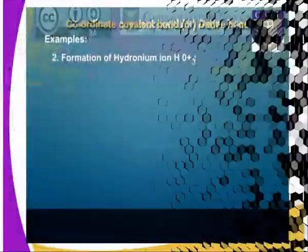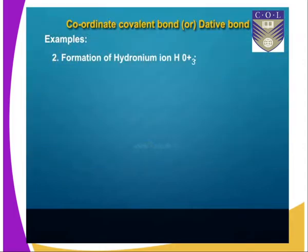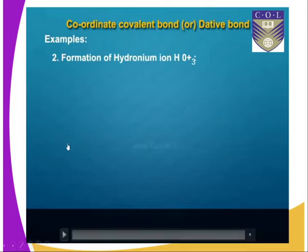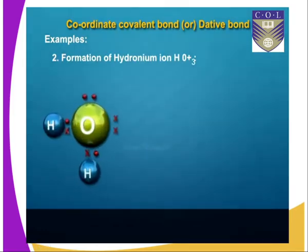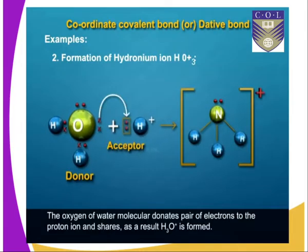Using the following illustration, using hydronium ion, we will be able to understand how a dative bond is formed, and we will be able to see how a single atom donates two electrons to be shared among the two atoms forming this type of bond. Hydronium ion is formed by hydrogen accepting two electrons from what we refer to as water.